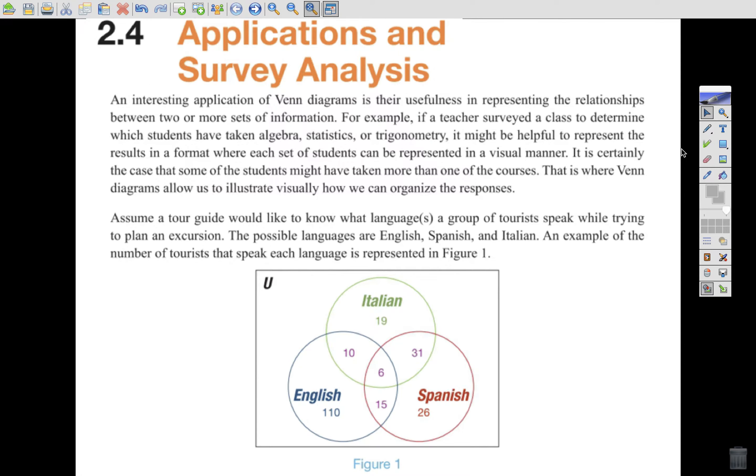All right, in 2.4 we're going to talk about applications of these Venn diagrams and the set operations and some survey analysis. An interesting application of Venn diagrams is their usefulness in representing the relationships between two or more sets of information. For example, if a teacher surveyed a class to determine which students have taken algebra, statistics, or trigonometry, it might be helpful to represent the result in a format where each set of students can be represented in a visual manner. It is certainly the case that some of the students might have taken more than one of the courses. That is where Venn diagrams allow us to illustrate visually how we can organize their responses.